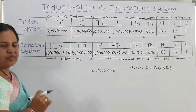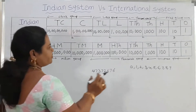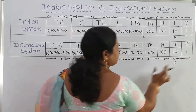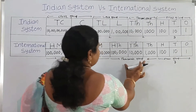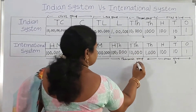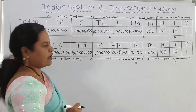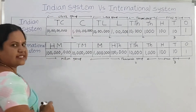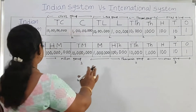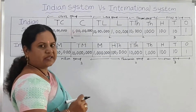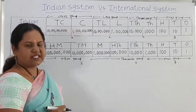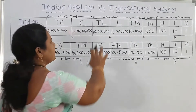In the international system, we divide into groups as well. The ones group has 3 places. The thousands group includes 1,000, 10,000, and 100,000 — that is 3 places. Then millions, ten millions, hundred millions — 3 places. So the pattern is 3, 3, 3 from right to left.